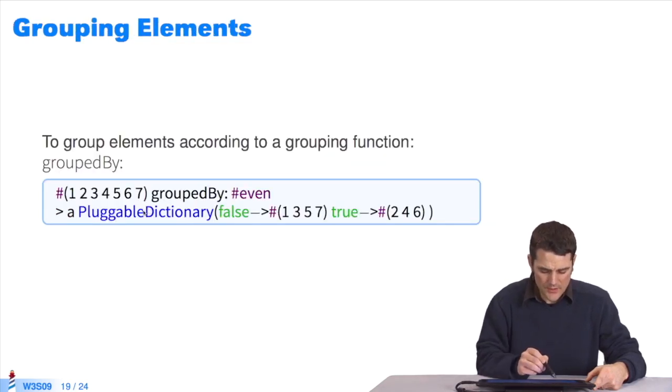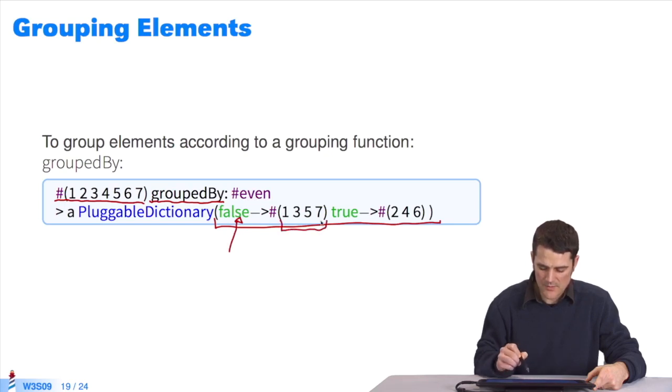This is the iterator groupedBy. I can use it to group the elements of a collection with respect to criteria. I send this message to the collection 1, 2, 3, 4, 5, 6, 7. As a result, I get a dictionary. All the elements which returned false to this criterion, which was even, the even elements. As you can see, I have all the odd elements. All the even elements returned true.